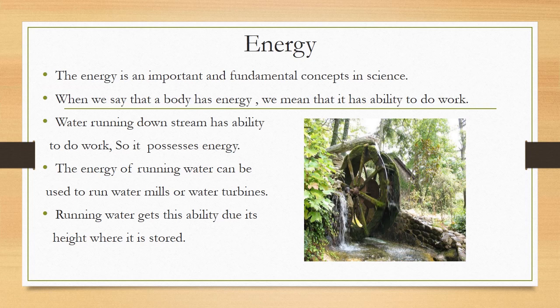The energy of running water can be used to run water mills or water turbines, as in the case of dams. Running water gets its ability due to its height where it is stored. So the energy gotten from height when stored is called potential energy. Whenever the water moves, the potential energy changes into kinetic energy. At the end of this lesson we are going to discuss in detail how one form of energy changes into another form.